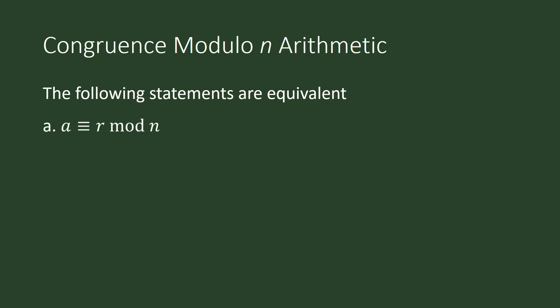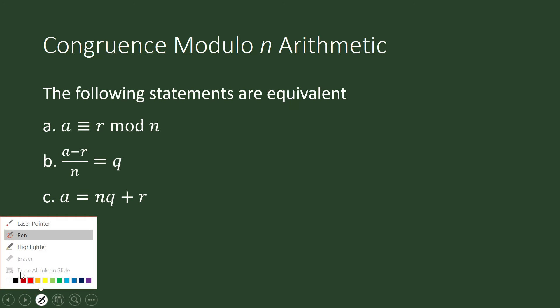a is congruent to r modulo n if and only if a minus r divided by n equals q. This means n divides a minus r exactly. But this is also equivalent to this statement, the statement behind your Euclidean Division Theorem.